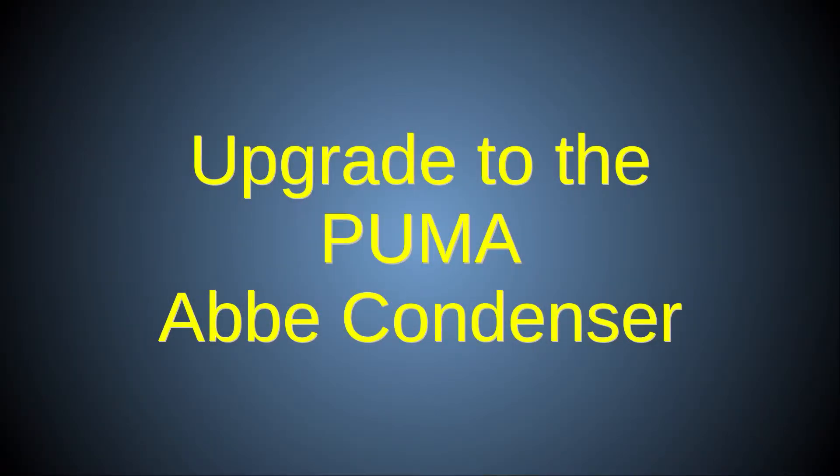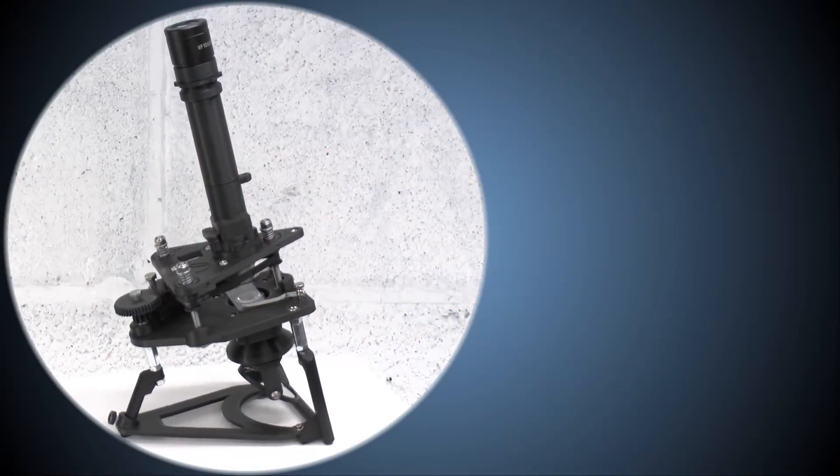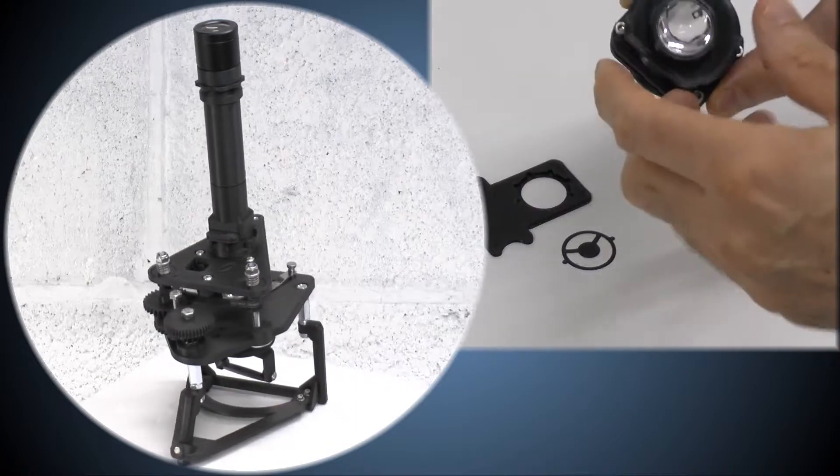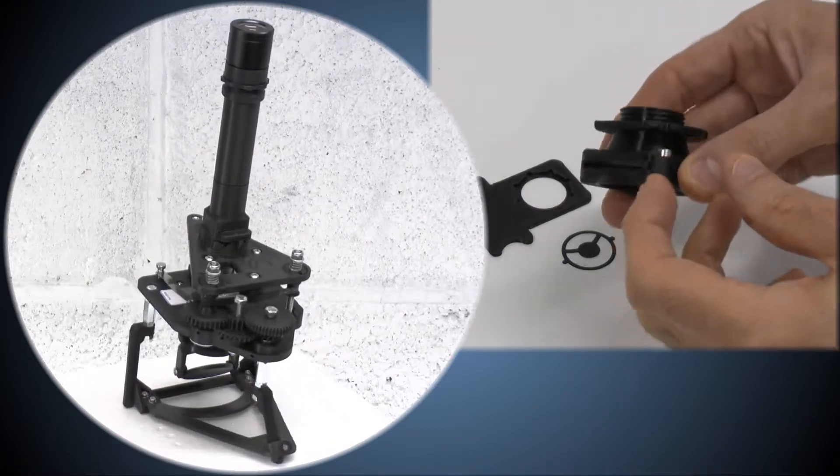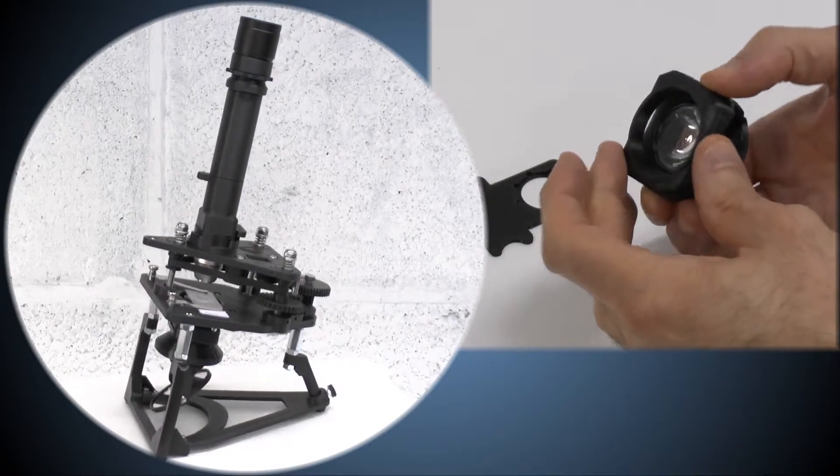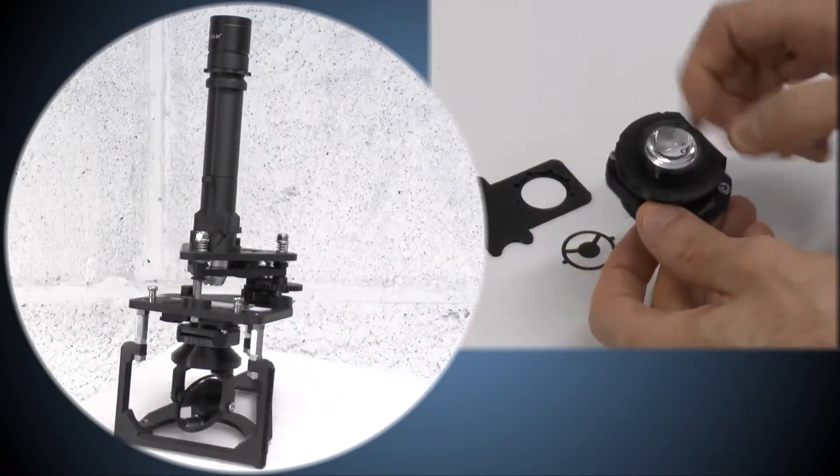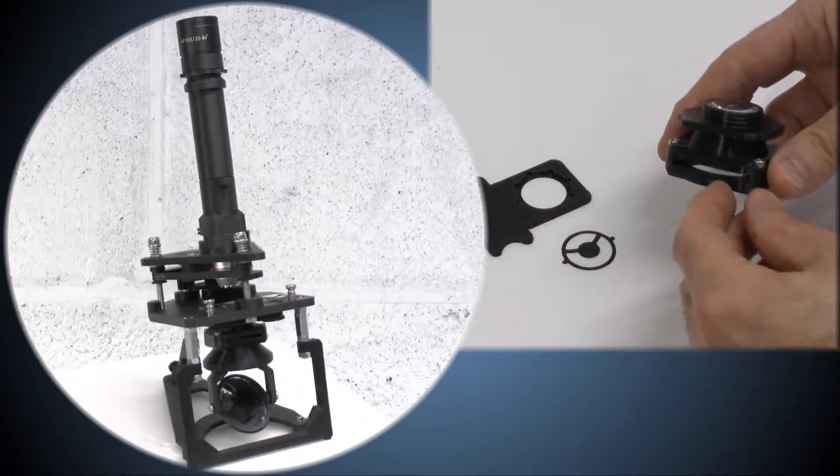In this video, I'll show you how to build the Puma Abbe condenser and fit it to a Puma foundation scope. The Abbe condenser lets you use higher magnification objectives and specialist forms of microscopy like dark ground illumination and Schlieren phase contrast.